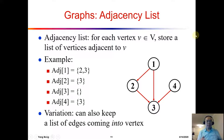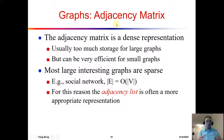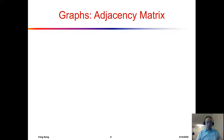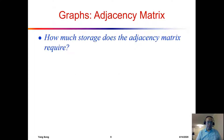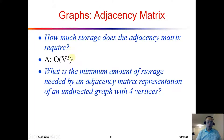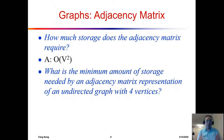The next topic is the adjacency list. We just talked about the adjacency matrix and the problem is that if we have a very sparse graph, there are going to be a lot of zeros. Storing an adjacency matrix takes O(V²) memory space, which can be too much for a sparse graph — especially one with a large number of vertices.